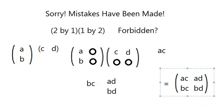And just remove the term and you basically get the answer to this. So that would be equal to AC, AD, BC, BD. So it's possible to do a 2 by 1 times a 1 by 2 and I apologize for making that mistake and I hope that won't happen again.